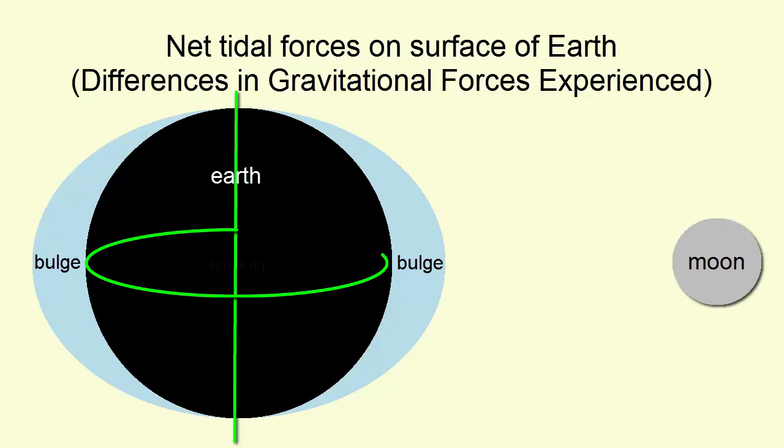And the solid Earth rotates under these bulges, carrying various parts of the planet into and out of these bulges throughout the day. When you are standing under a bulge, you are experiencing a high tide. When you are between two bulges, you experience a low tide. The water has been pulled away.